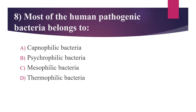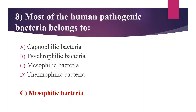Eighth question: most human pathogenic bacteria belong to — Option A: capnophilic bacteria. Option B: psychrophilic bacteria. Option C: mesophilic bacteria. Option D: thermophilic bacteria. The answer is Option C, mesophilic bacteria. Mesophilic bacteria grow best at moderate temperatures ranging from 20 to 45°C. Most human pathogenic bacteria belong to this type, like Staphylococcus aureus, E. coli, Listeria monocytogenes, etc.